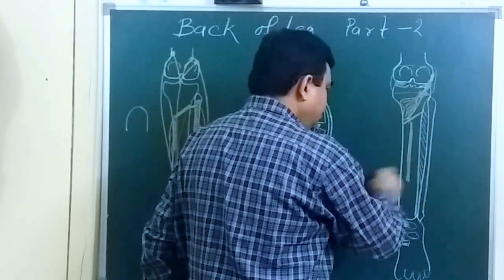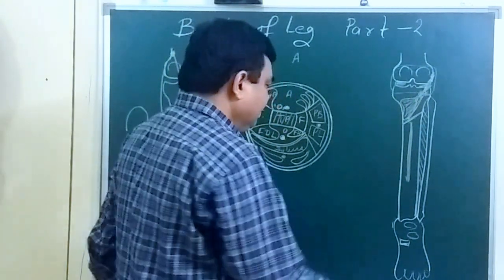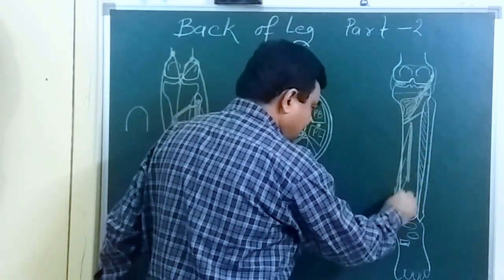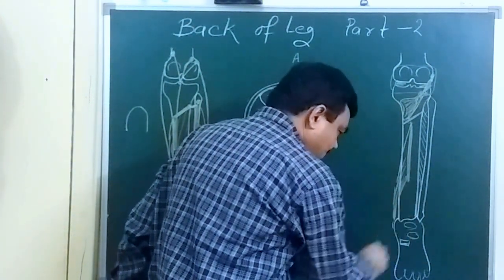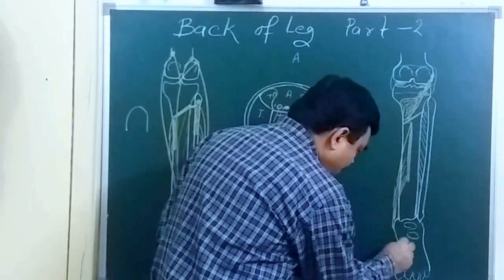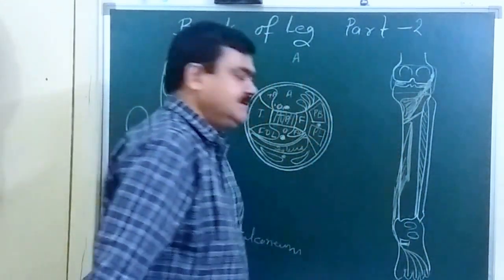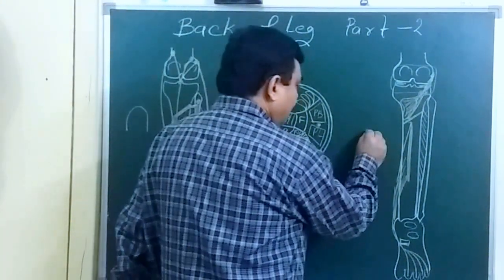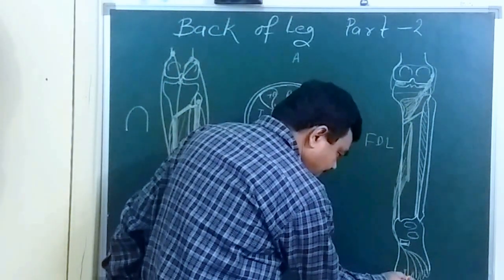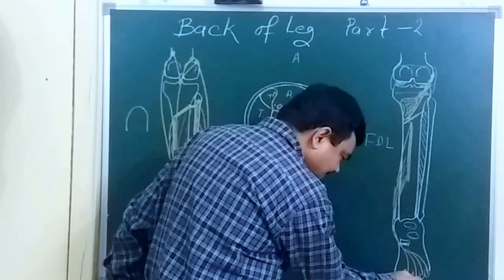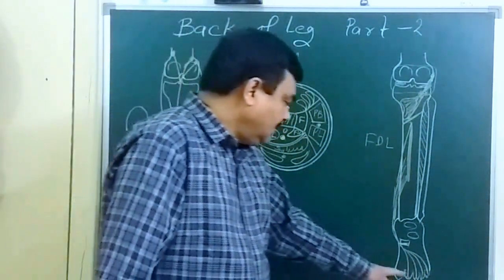This muscle takes origin from the posterior surface of the tibia, about the upper two-thirds of the tibia. This muscle is the flexor digitorum longus. It passes deep to the flexor retinaculum and comes into the sole, where it divides into four tendons. These tendons are inserted on the base of the terminal phalanx of the second, third, fourth, and fifth toes.